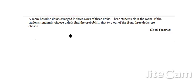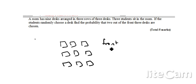And then one last question. We've got nine desks. Sometimes it might be helpful just to sketch them out, see what we've got. So there we go, we've got our nine desks. Those are the front desks. And three students sit in the room and find the probability that two out of the three front desks are chosen. Well, if two out of the three front desks are chosen, there's three desks at the front. Two of them need to be chosen. So I need three choose two.